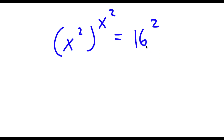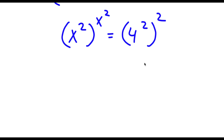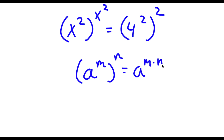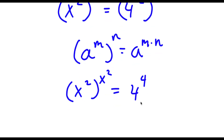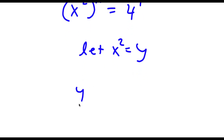Now 16 is the same thing as 4 to the power of 2. So I have x to the power of 2 to the power of x to the power of 2 is equal to 4 to the power of 2 to the power of 2. Using the rule a to the power of m to the power of n equals a to the power of m times n, that gives 4 to the power of 4. Now I'm going to let x to the power of 2 equal y, so now I have y to the power of y is equal to 4 to the power of 4.